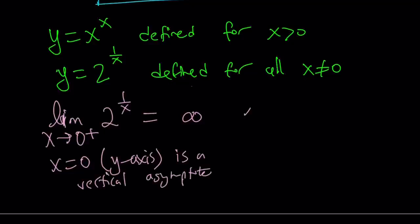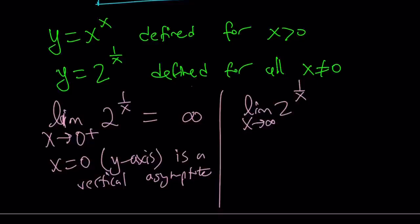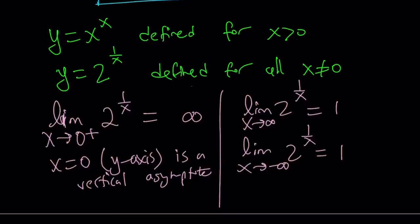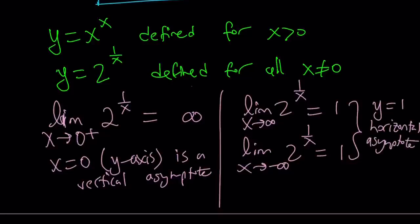What about the limits at infinity? As x approaches positive or negative infinity, 1 over x approaches 0, so 2 to the power of 0 approaches 1. The limit is 1 for both positive and negative infinity. So we have a horizontal asymptote at y equals 1. This function has two asymptotes, which gives you an idea about its boundaries.